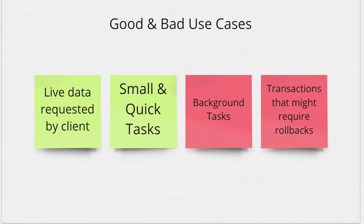So what are some good and bad use cases of HTTP communication? The most common good use case is if you need live data. For instance, if your front-end service needs to talk to your back-end service to display some data to the client, this has to be done through an HTTP request. Any other tasks that can be done super quickly are also good use cases — you won't need a long timeout for these.